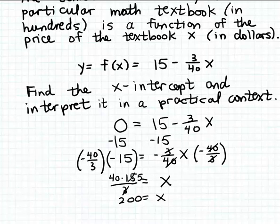So remember here, the output from this function f, the quantity y, that represented semester demand for a particular textbook measured in hundreds. And the input here, x, that was the price for the textbook in dollars.